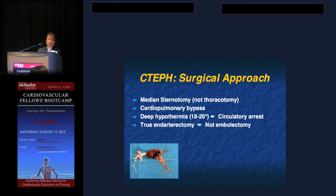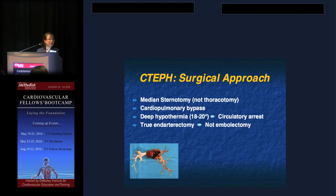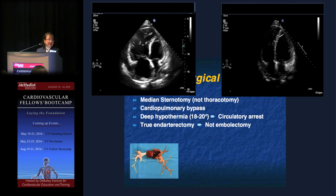Thromboendarterectomy is the surgery that has the potential to cure CTEPH. It requires a median sternotomy — not a thoracotomy — and the patient goes on cardiopulmonary bypass under very deep hypothermia and circulatory arrest. It is a true endarterectomy where layers of the vessel are laminated and peeled off. The surgical specimens show the layers of thrombus removed from the patient. This is not an embolectomy. You can see in patients who undergo this surgery an incredibly remodeled, then normalized right ventricle post-operatively — a truly life-saving measure.